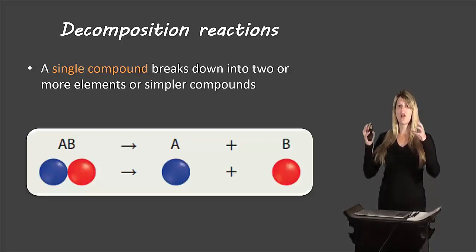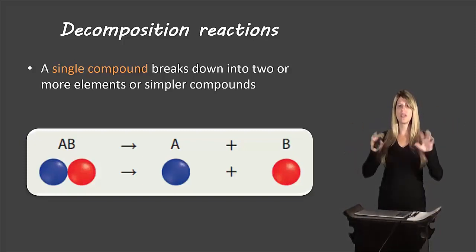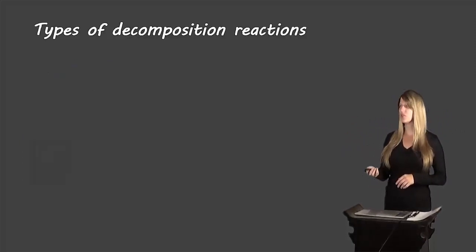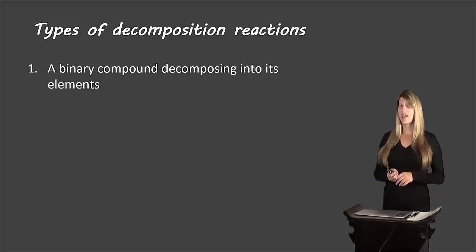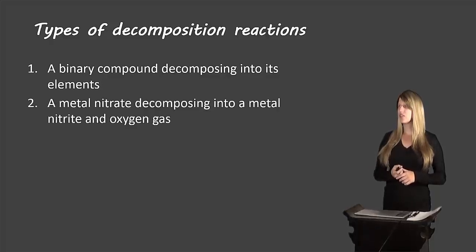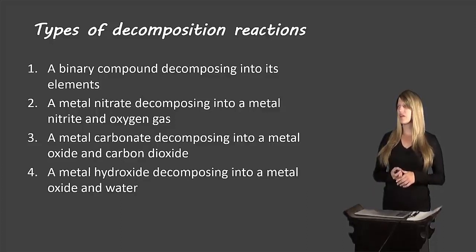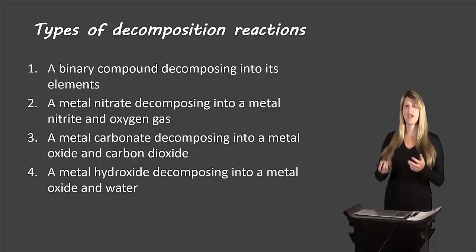As shown in the picture, there's a compound with elements A and B, and it breaks apart into element A and element B separately. There are a few types of decomposition reactions: a binary compound decomposing into its elements; a metal nitrate decomposing into a metal nitrite and oxygen gas; a metal carbonate decomposing into a metal oxide and carbon dioxide; and a metal hydroxide decomposing into a metal oxide and water.